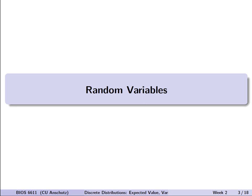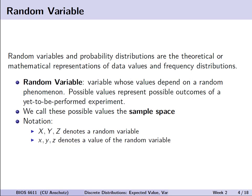Random variables and probability distributions are the theoretical or mathematical representations of data values and frequency distributions. The random variable is a variable whose values depend on some random phenomenon; possible values represent the possible outcomes of a yet-to-be-performed experiment. We'll call this set of possible values the sample space. Capital letters will denote a random variable, and lowercase letters will represent some realization or actual observed value in the sample space.